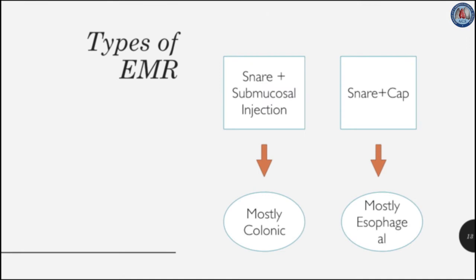EMR can be achieved by snare resection. Submucosal injection is usually used to raise the lesion prior to snare resection, which is mostly done for flat polyps in the colon. We can also use cap and suction, and often ligation to trap the tissue and then use a snare to cut above or below the ligator band.